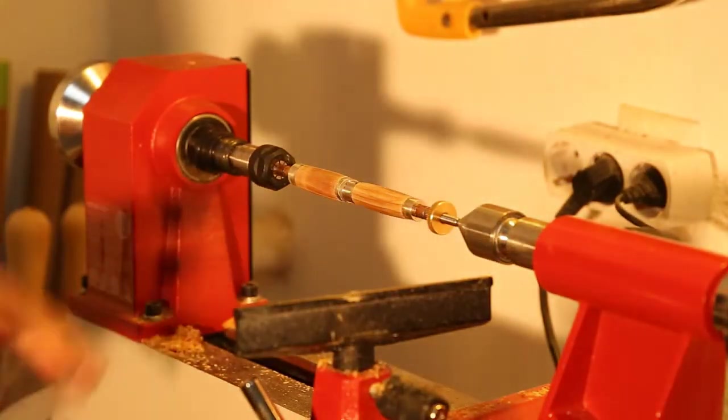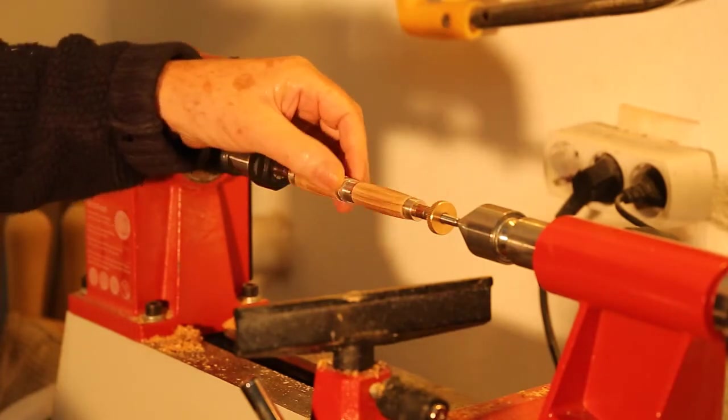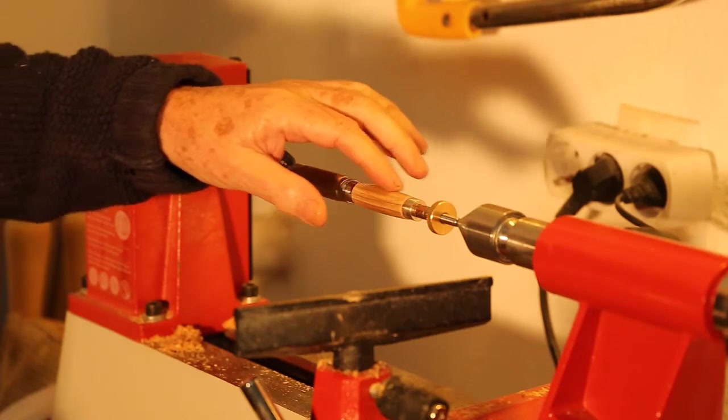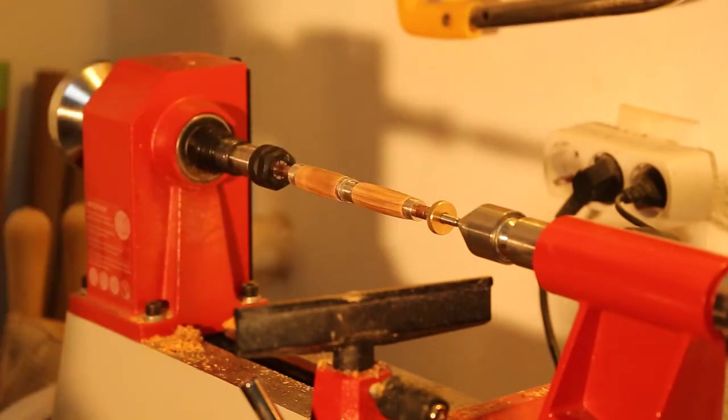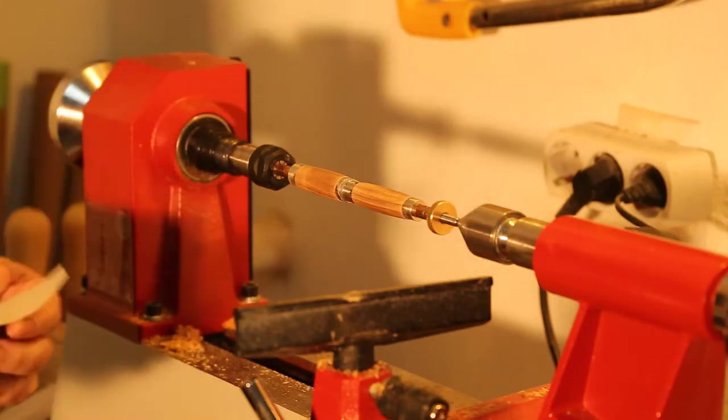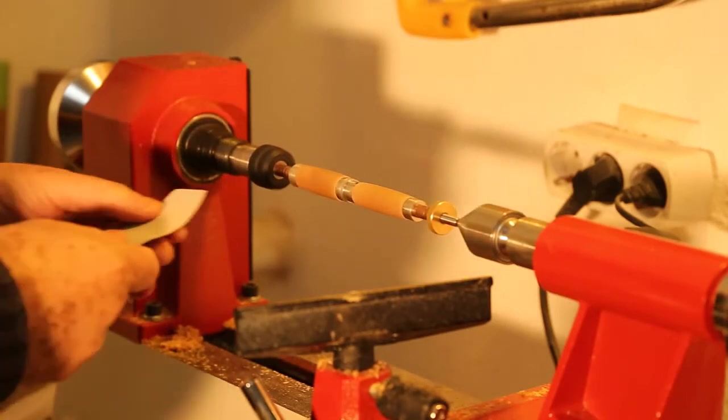I've taken the two blanks down on the lathe to where they just touch the bushes on each side. Then, with different sandpapers going finer and finer, you just sand everything down.